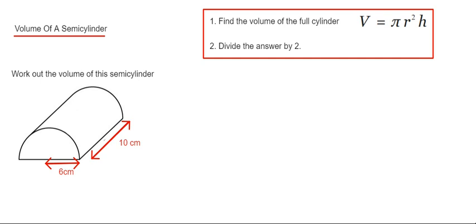So let's have a look at the example here then. So this semi-cylinder has a radius of 6 centimeters and our length is 10 or height. So we're just going to substitute these two numbers into the formula above. So it would be V equals pi times by 6 squared times by 10.